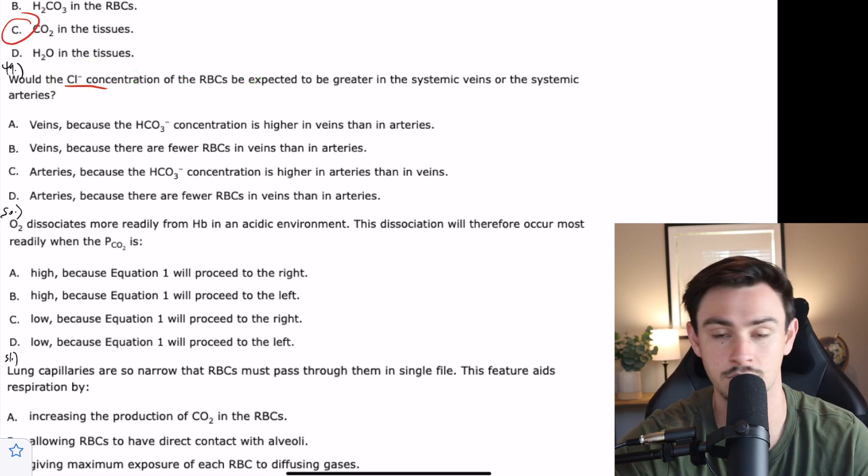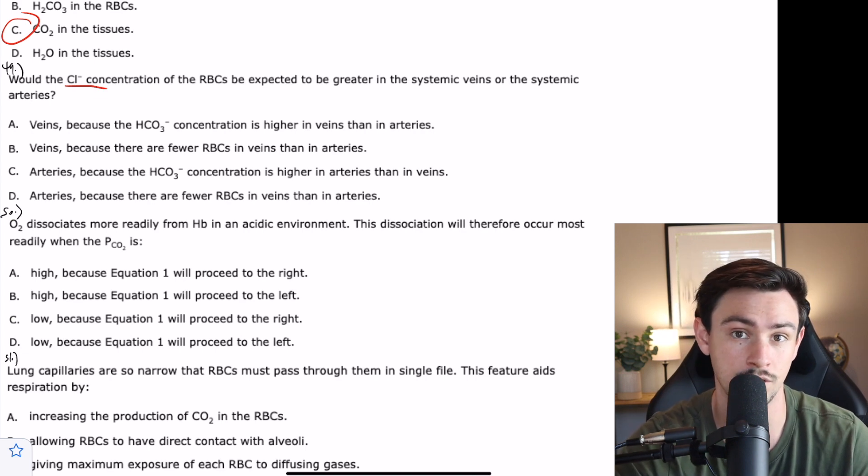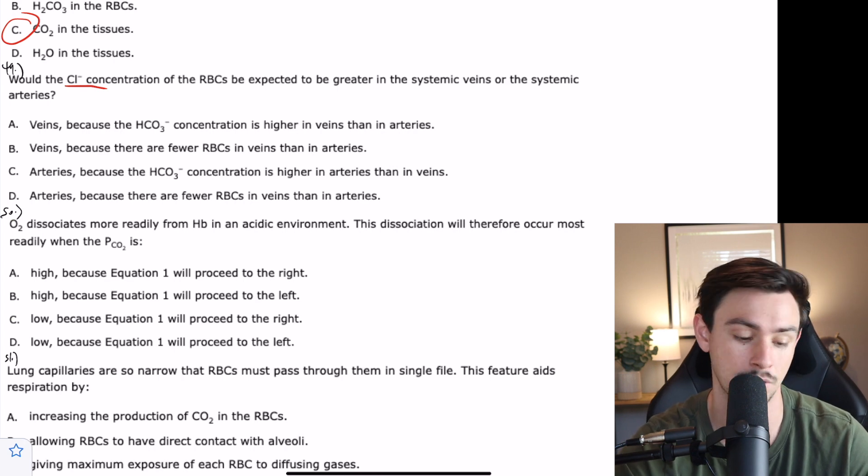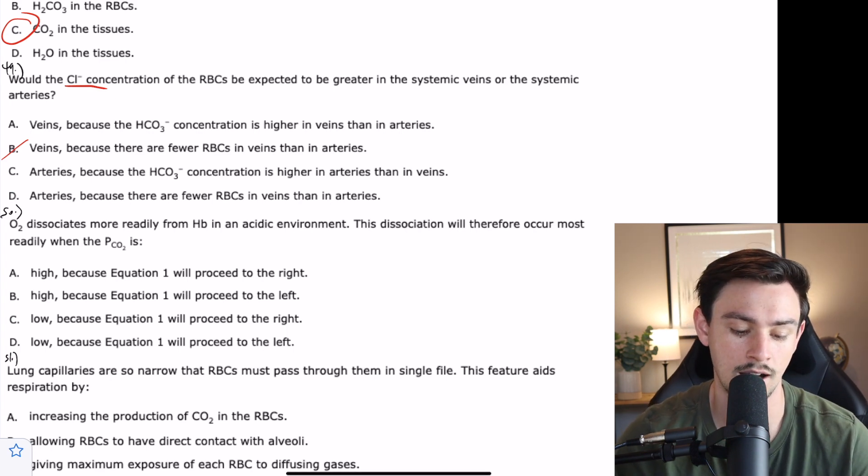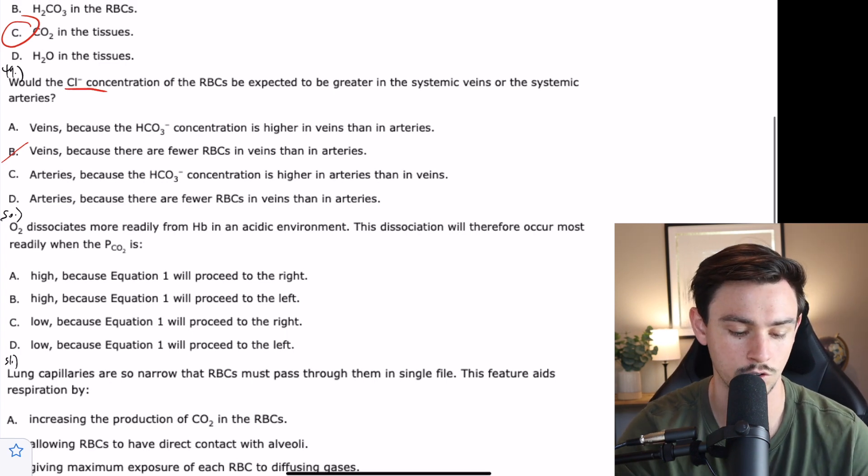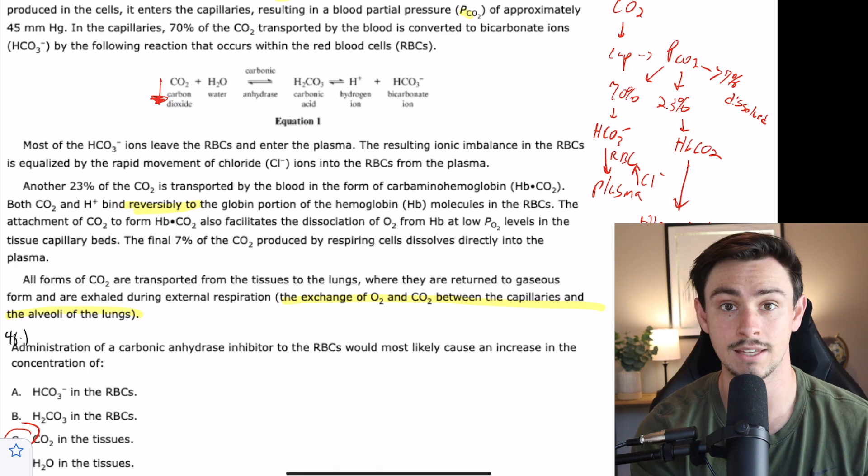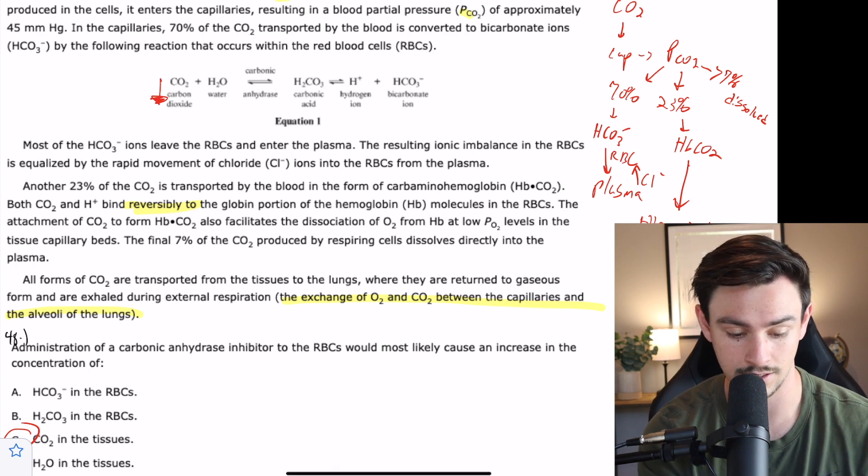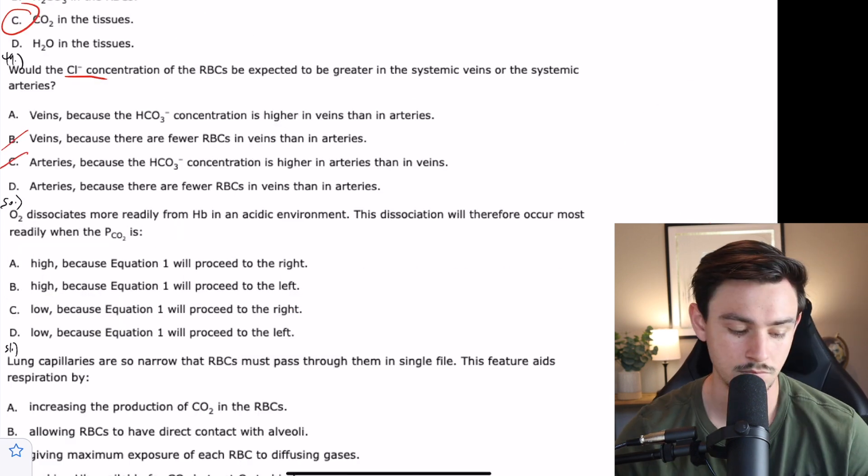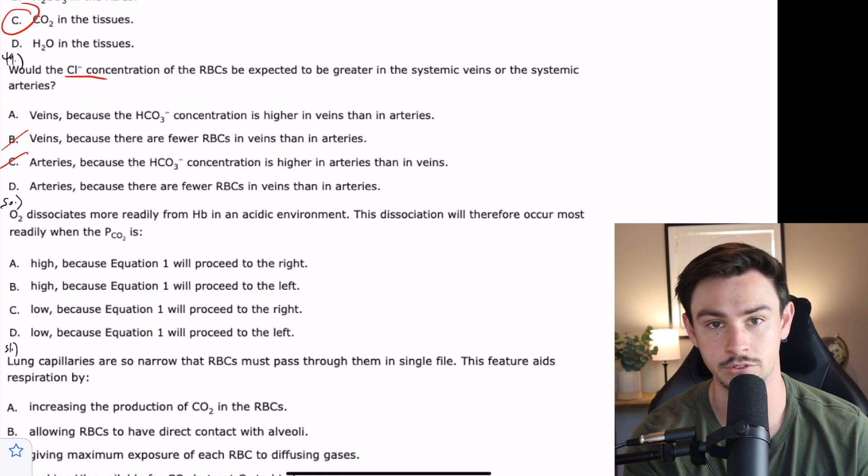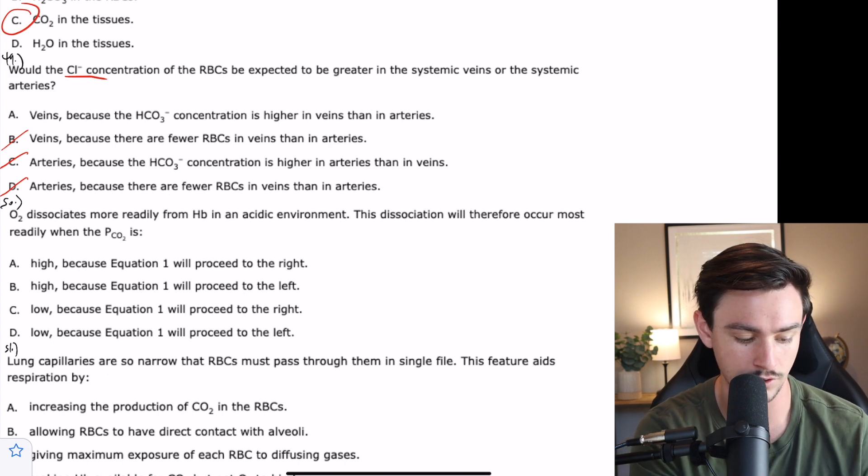B says veins because there are fewer red blood cells in veins than in arteries. That is not true. You don't lose red blood cells between the transfer of arteries and veins. C says arteries because the bicarb concentration is higher in arteries than in veins. We just talked about why that would not be the case because we have less CO2 in the arteries, which means we would have less bicarb, because the reaction would shift to the left. And the correct answer is A.